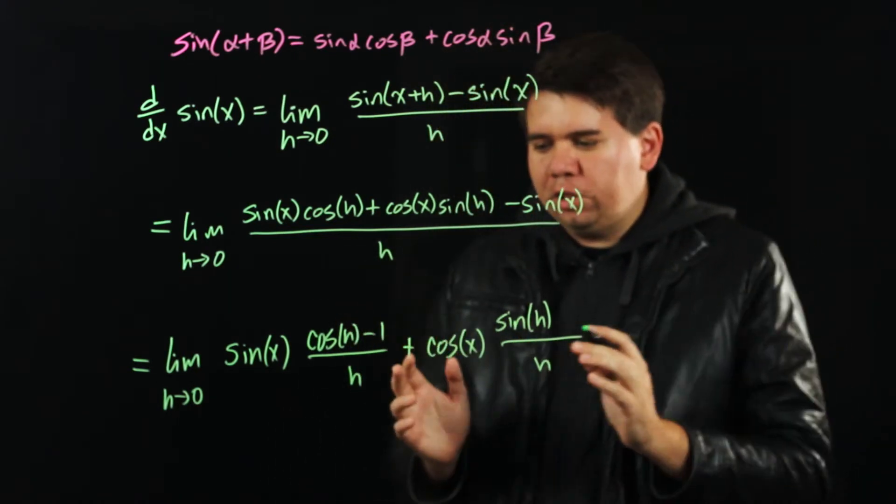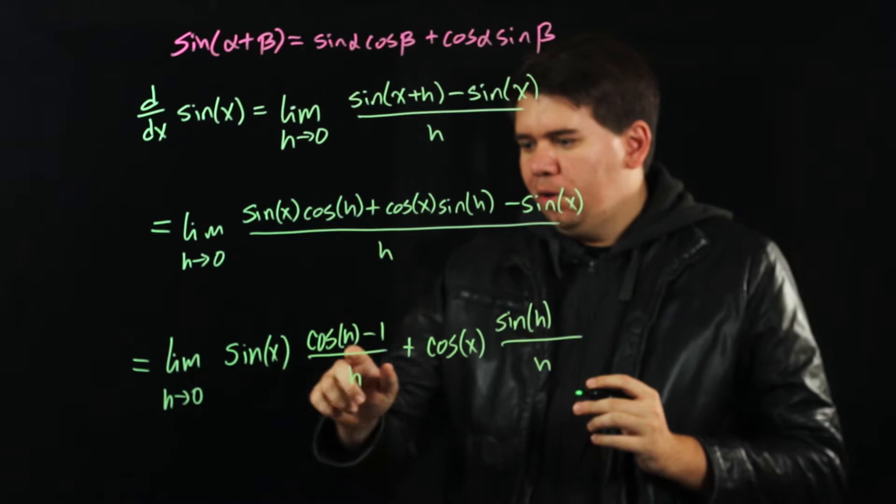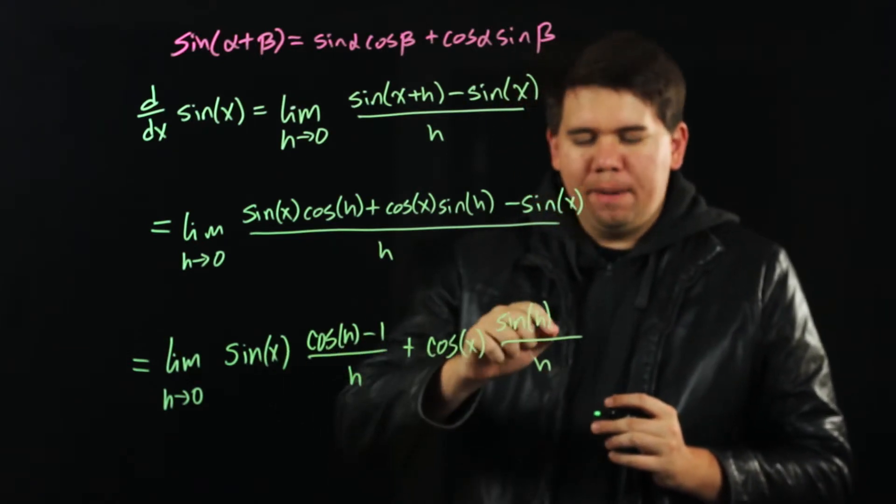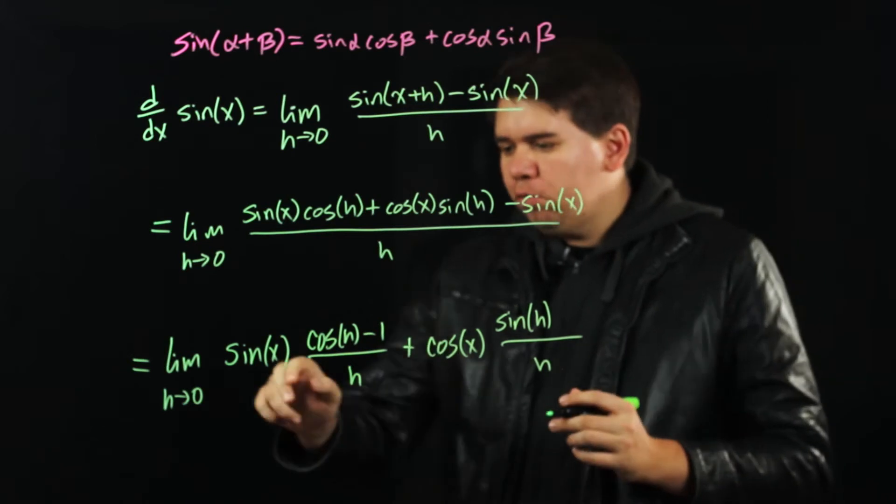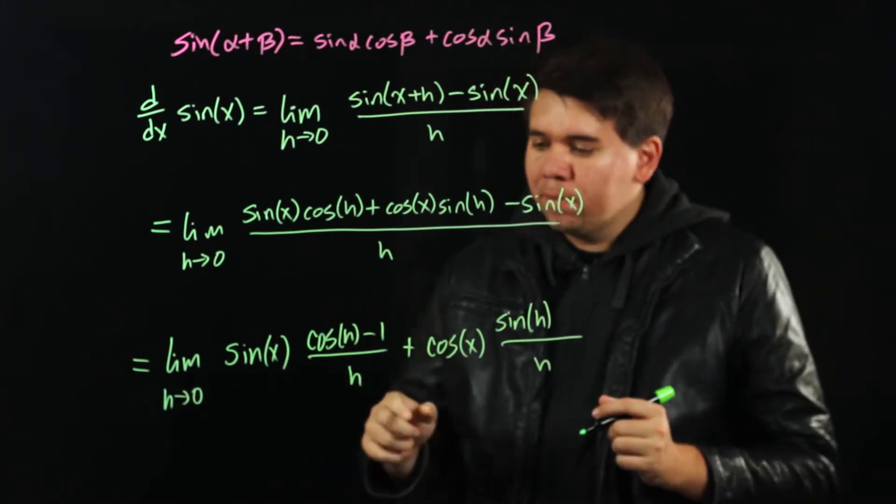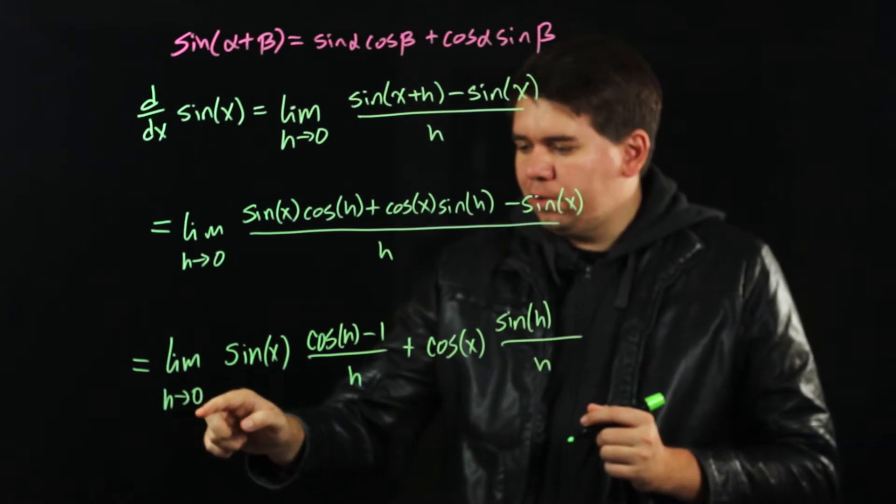Now you maybe think we just made a bigger mess. We have sine of x times this messy piece plus cosine of x times this messy piece. And if you try to let h run to 0 right now, you're going to get into trouble.